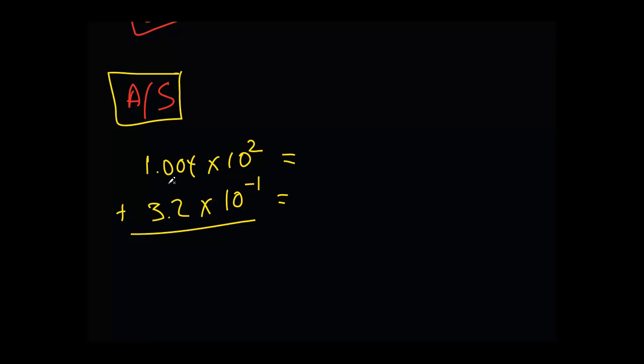So, 1.004 times 10 to the 2, well, that's easy. It just equals 100.4, right? And then, 3.2 times 10 to the minus 1, well, it's a small number. Remember, I have to move the decimal to the left. That's a negative exponent on the base 10. So, that's going to be 0.32.